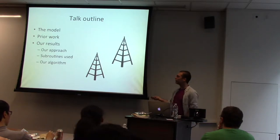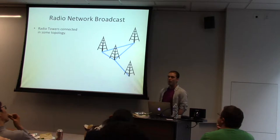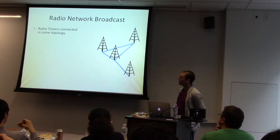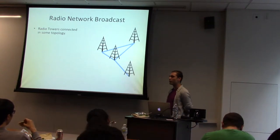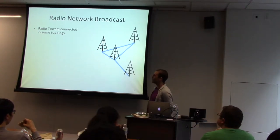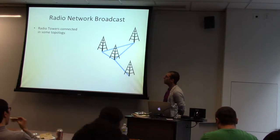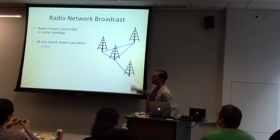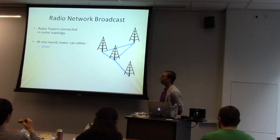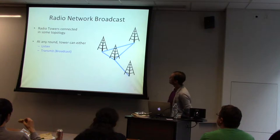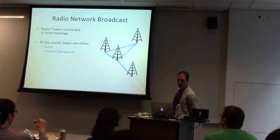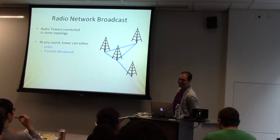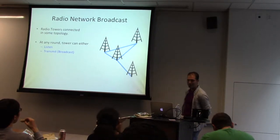Let's talk about the model. In the radio network broadcast model, we have a bunch of radio towers connected in some topology, which corresponds to which tower can transmit to which other tower. At any given round, towers can either listen — so all the towers right now are listening and doing nothing particularly interesting — or they can broadcast to all of their neighbors.